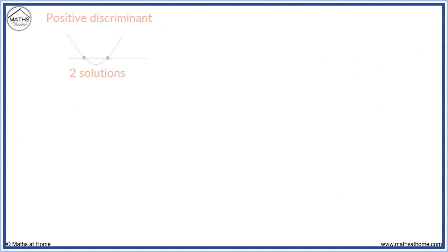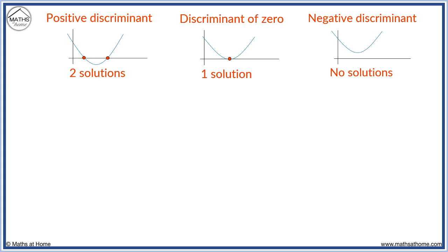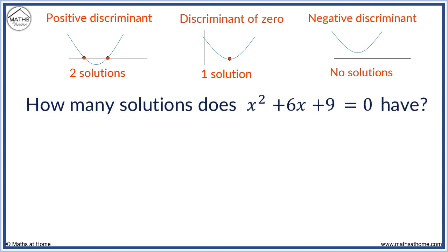There are three cases. Positive values of the discriminant give two solutions. If the discriminant is 0, there is one solution. Negative discriminants give us no solutions.